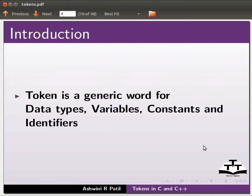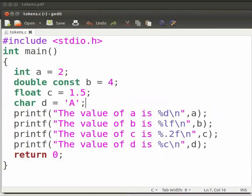Let us start with our program. I have already typed the code on the editor. Let me open it. Note that our file name is tokens.c. In this program, we will initialize the variables and print their values.